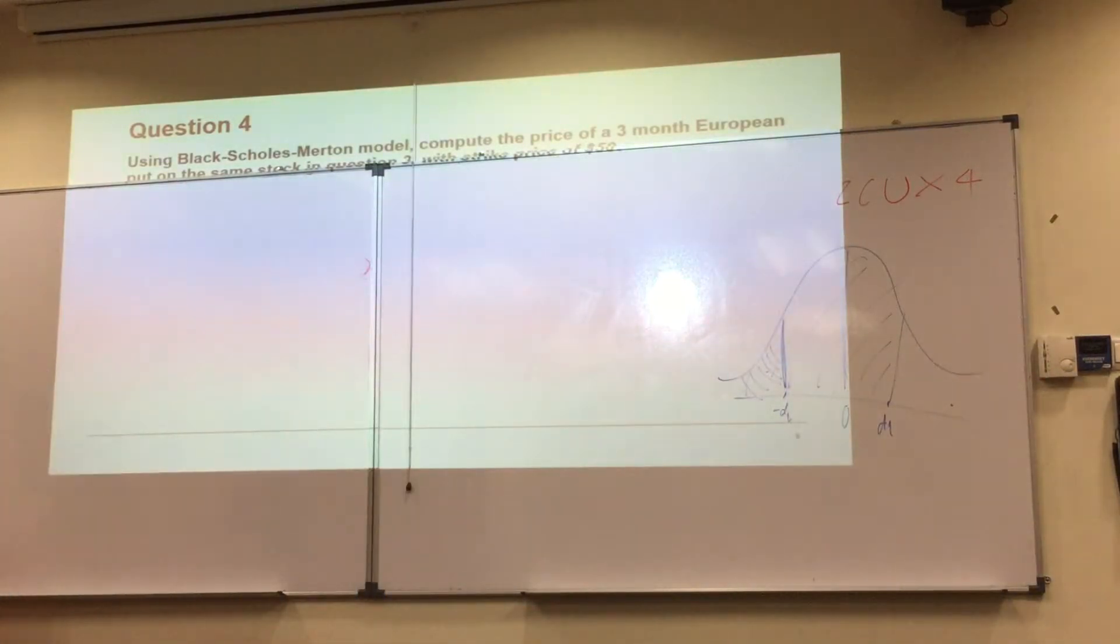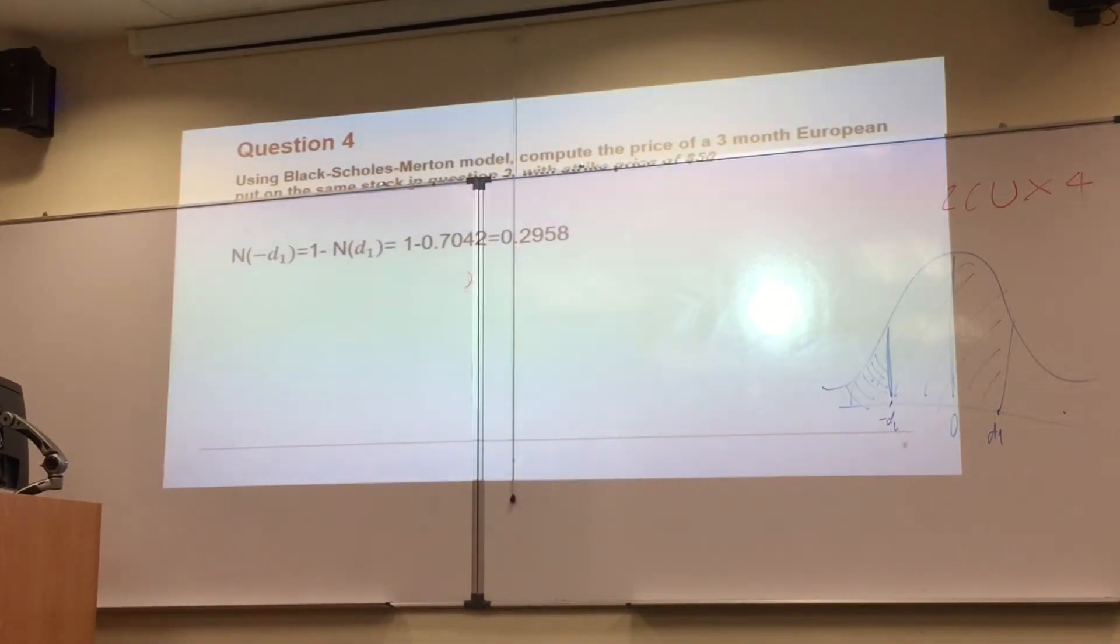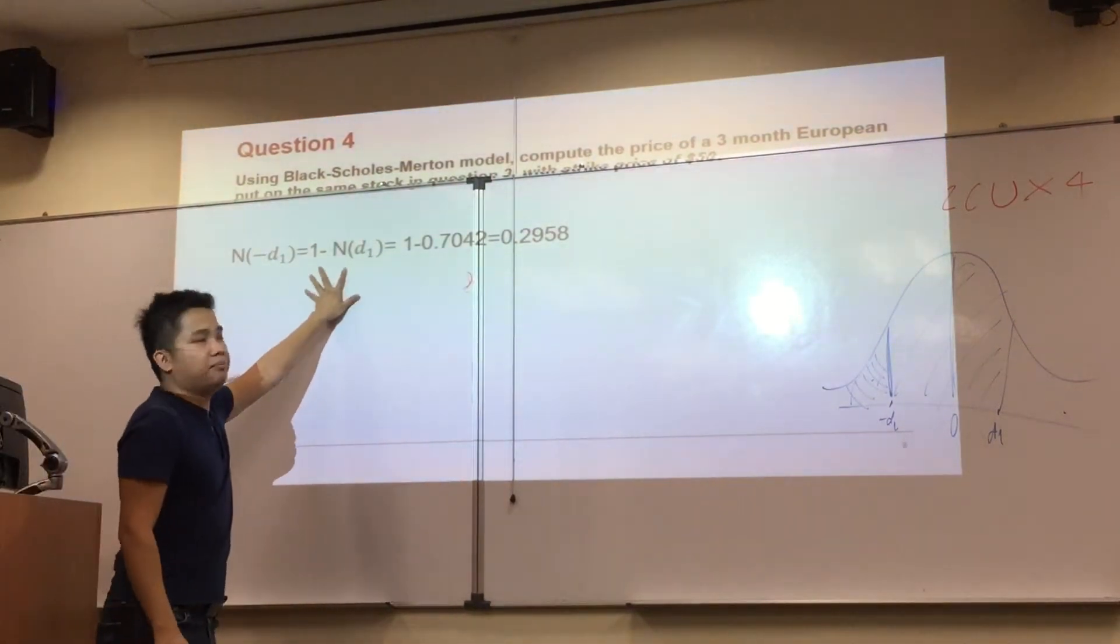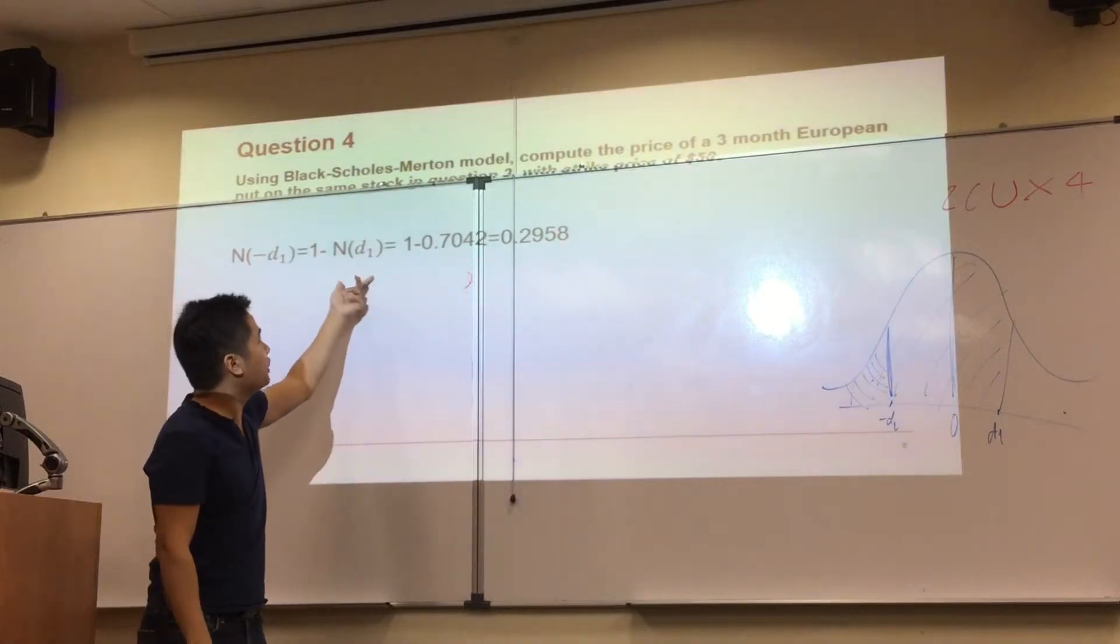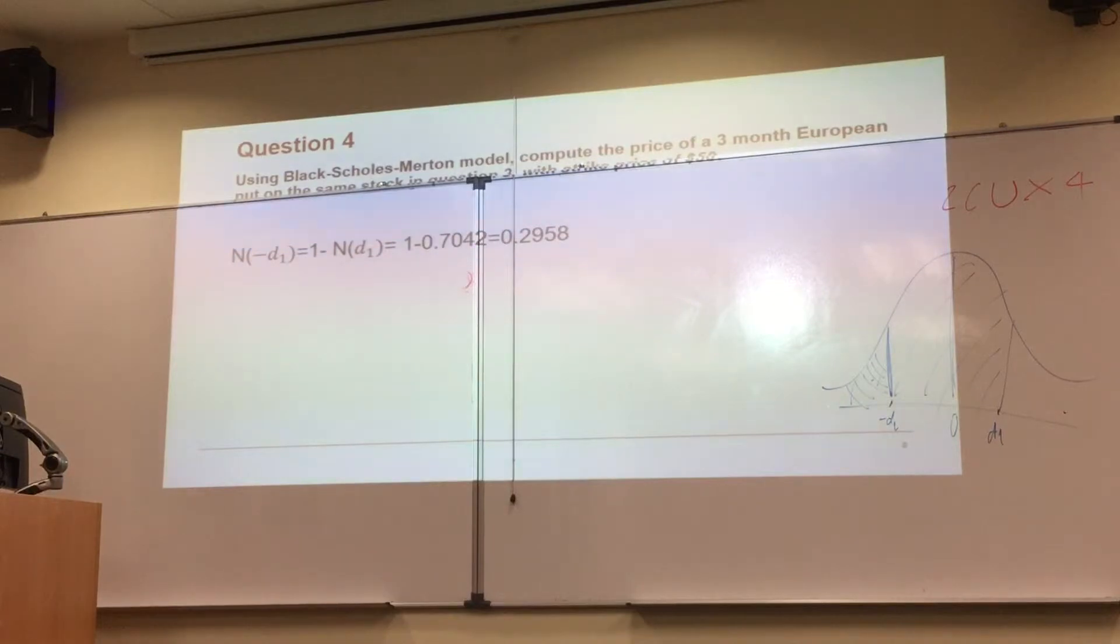So you can calculate it using this shortcut. N of negative D1 will be equal to 1 minus N of D1. Because you already got N of D1, you can put it into this one. For N of negative D2, we do the same thing.